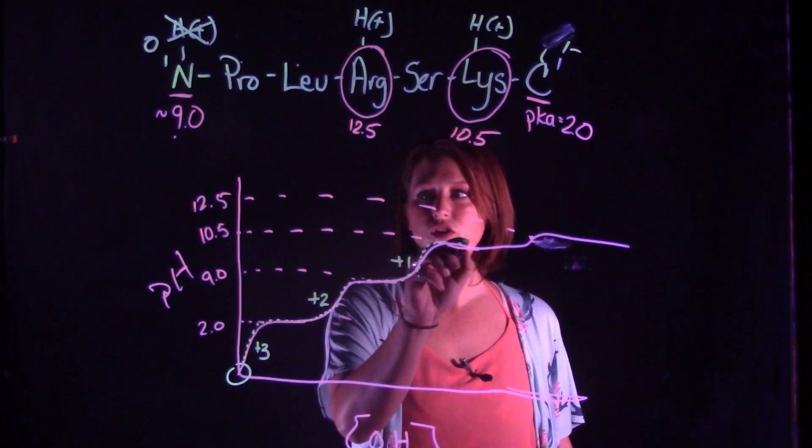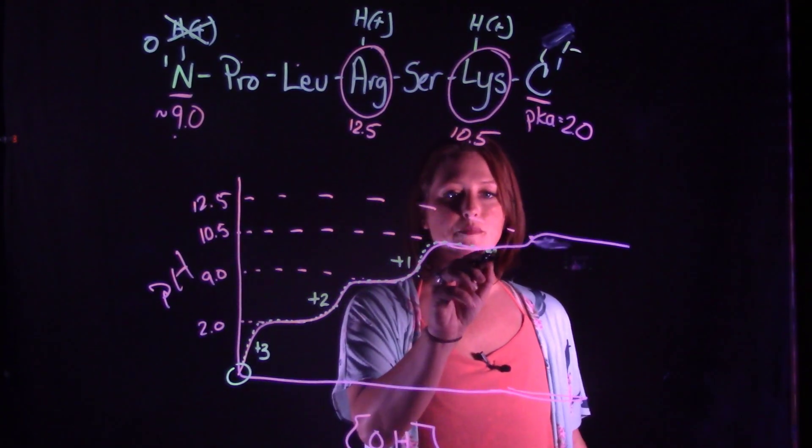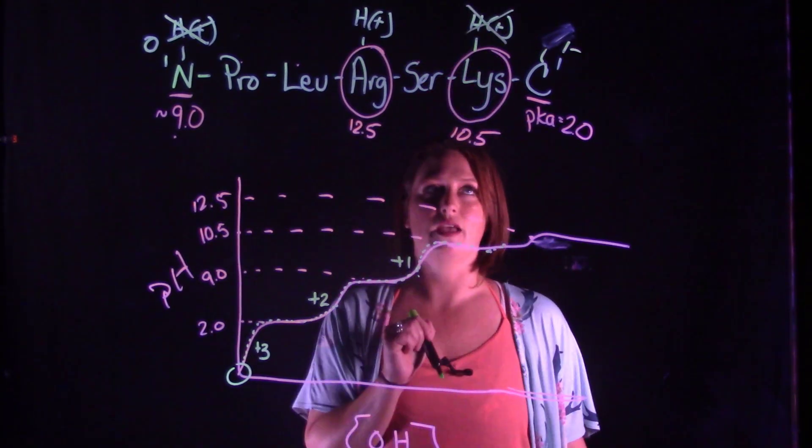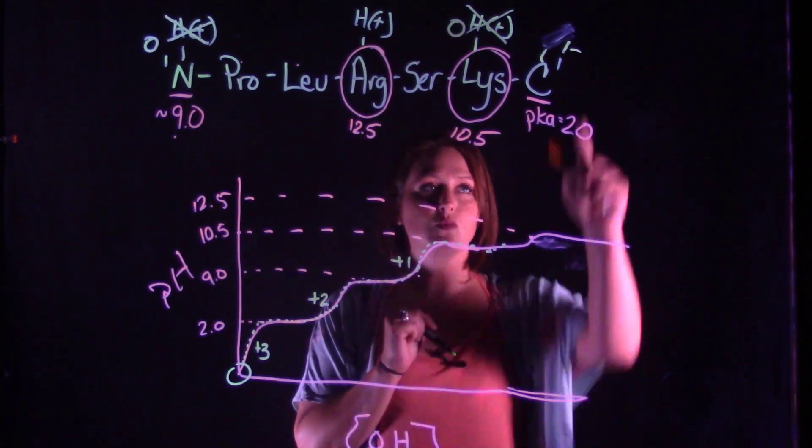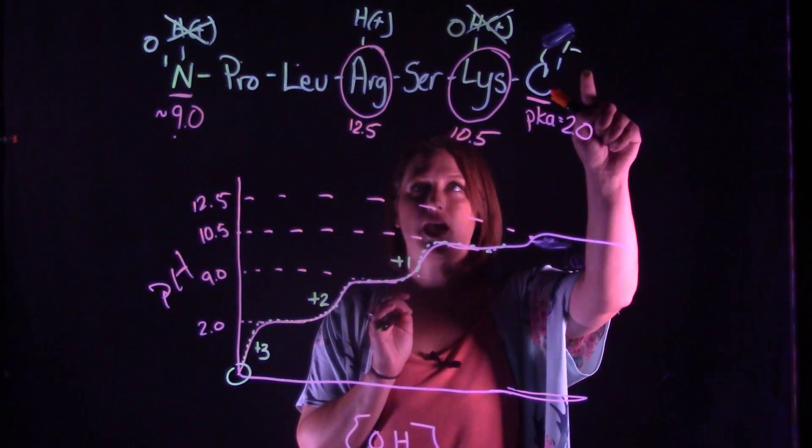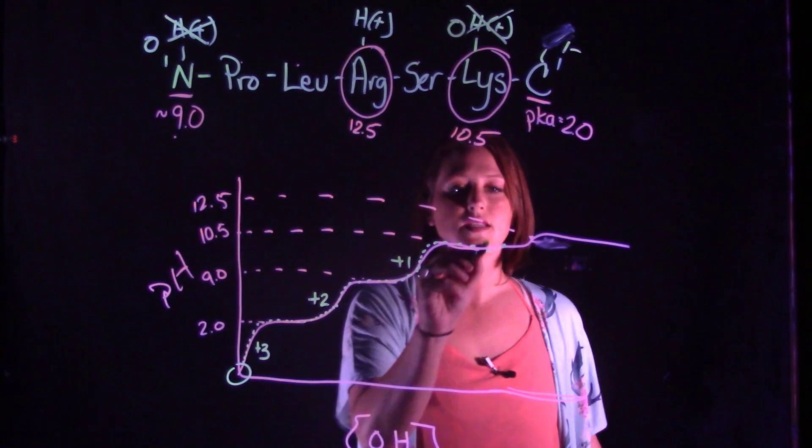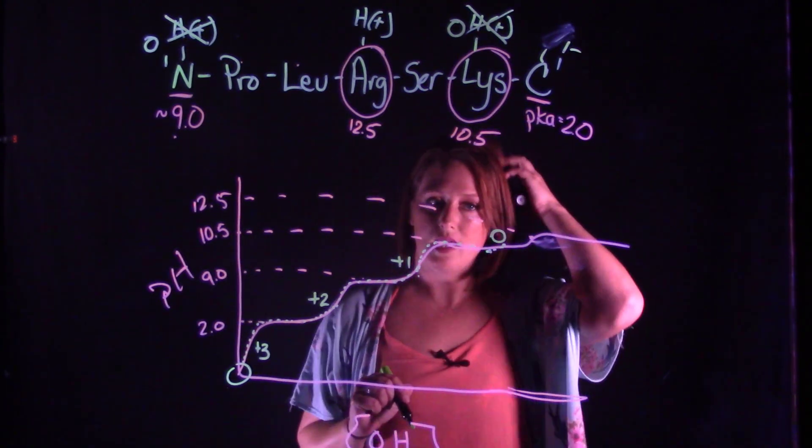We continue to titrate to get to the pKa of lysine. As we go above the pH of lysine and we lose that proton on lysine, we get another neutral zero charge on lysine, giving us one minus on the carboxylic acid, one plus on arginine, giving us a net zero charge between the two pKa's.